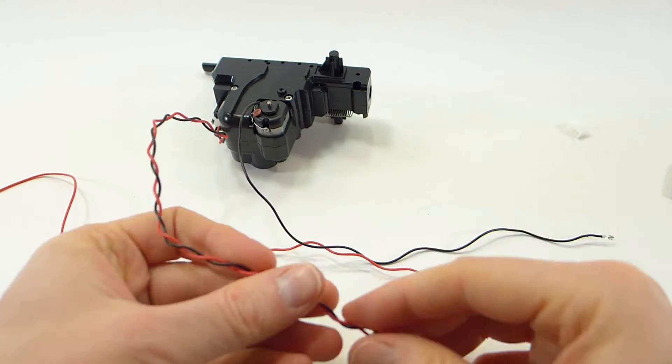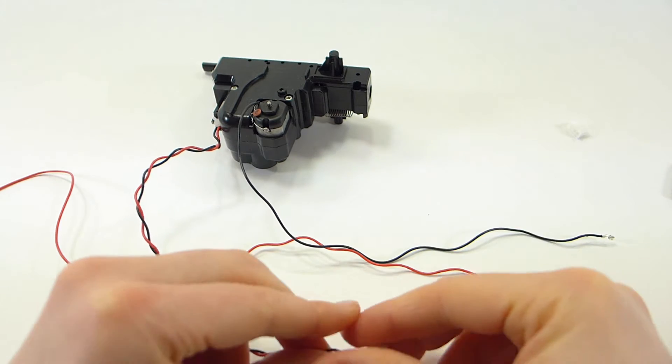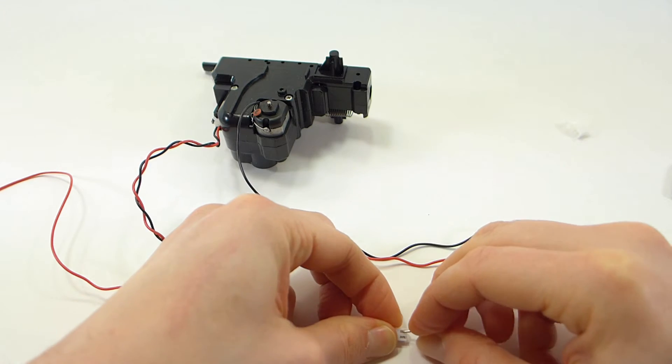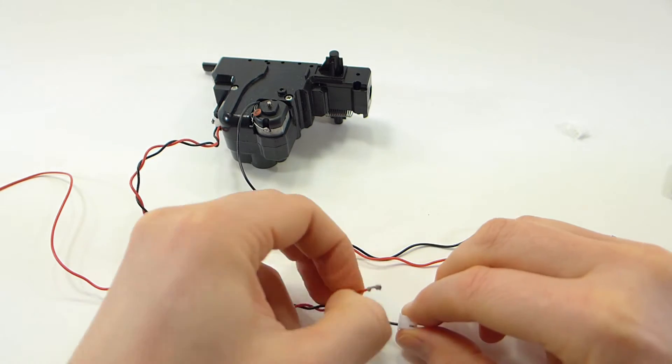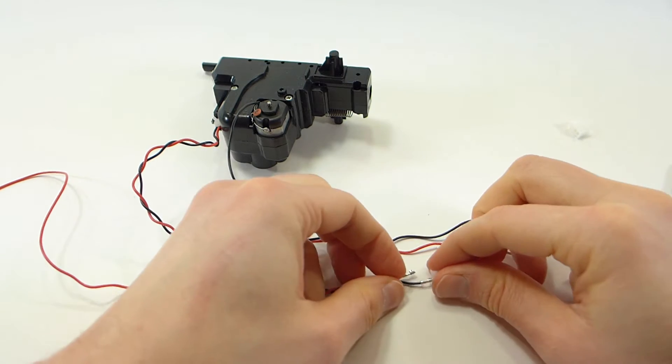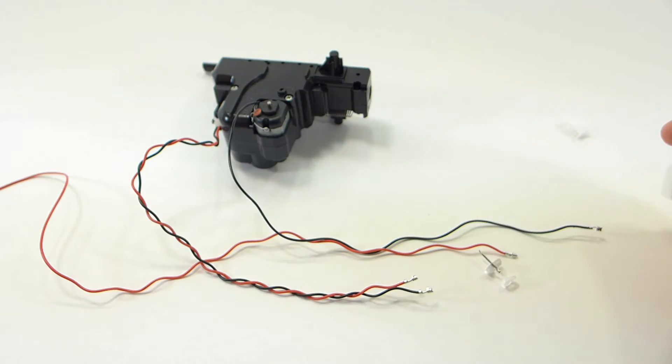Now there is also a two-pin plug attached to the limit switch at the back of the unit, and we don't need this plug but we do need the wires, so let's remove them from the plug. And you can throw this two-pin plug away.